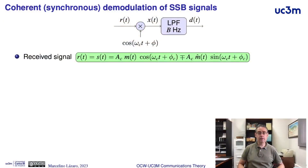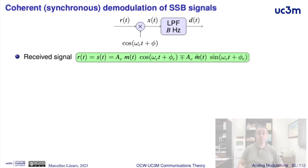The receiver for single sideband modulation is a coherent or synchronous receiver. In this video, we will analyze the need for this receiver and we will see the effect of a non-synchronous or non-coherent receiver.